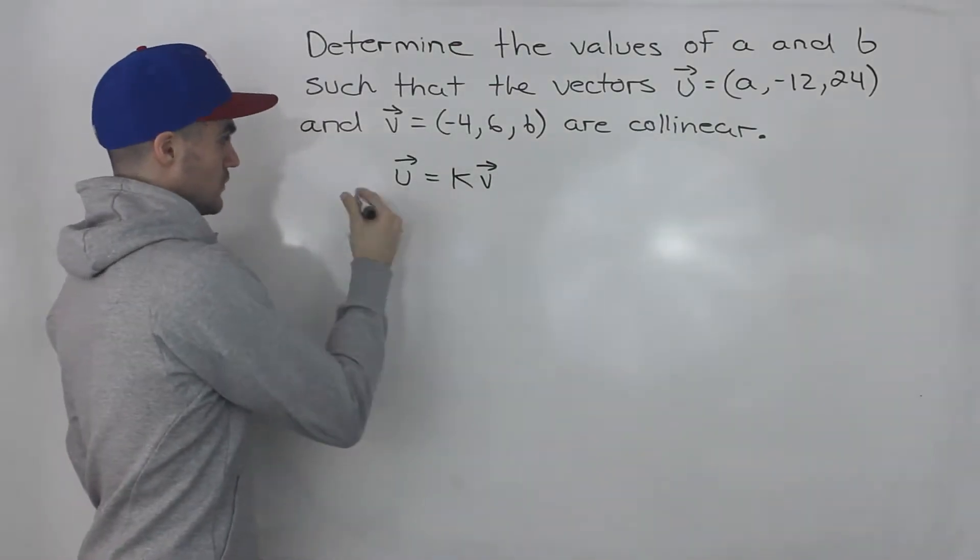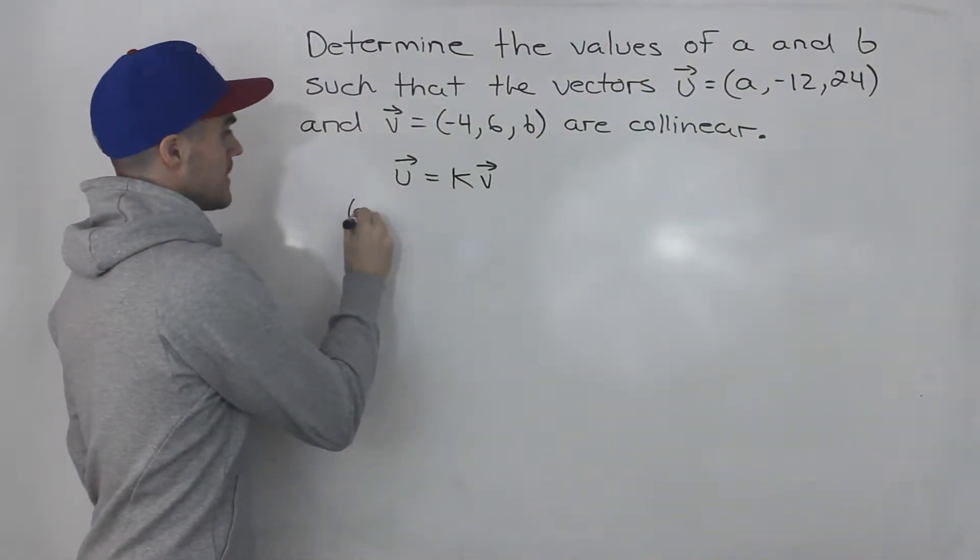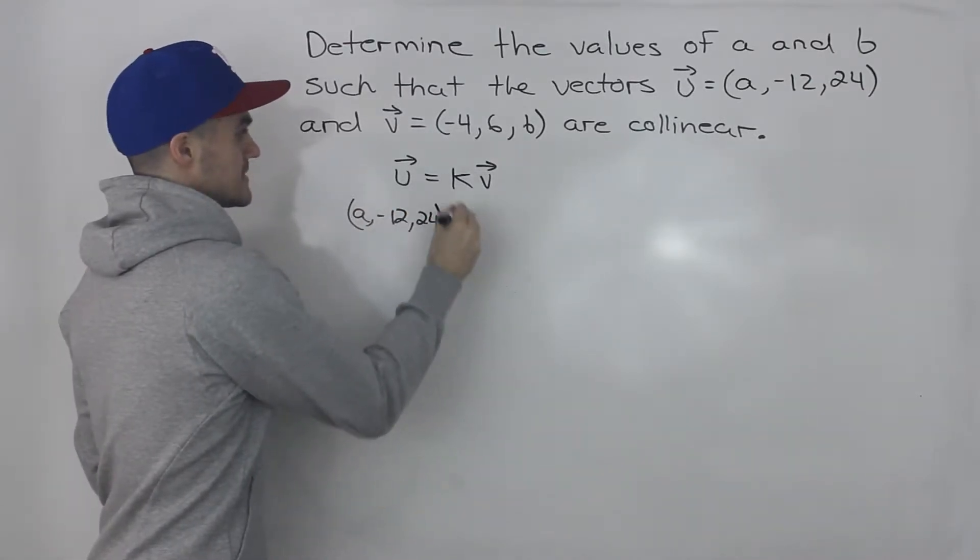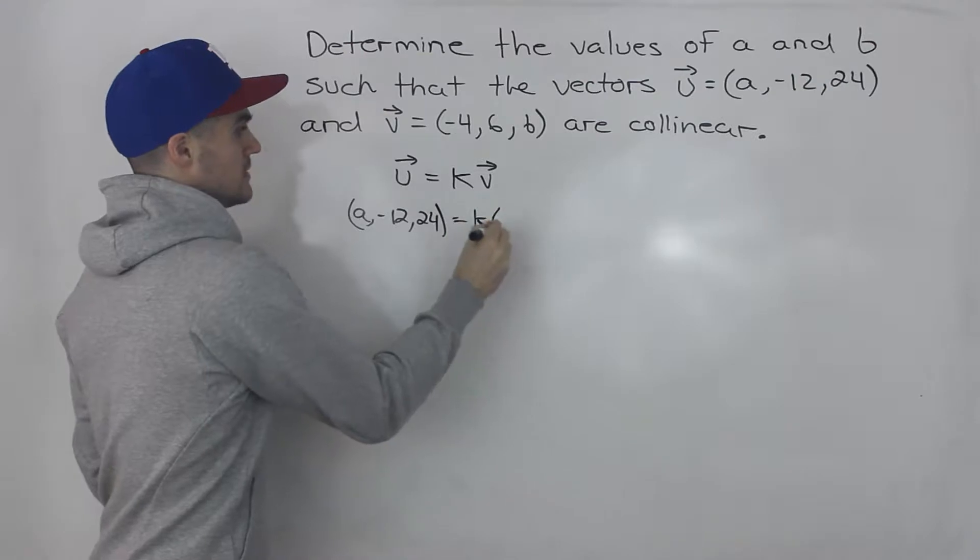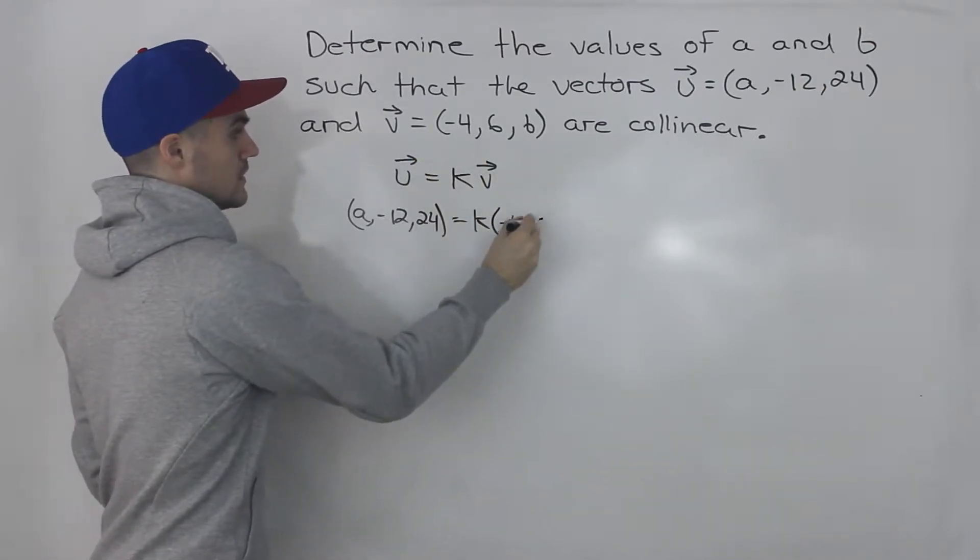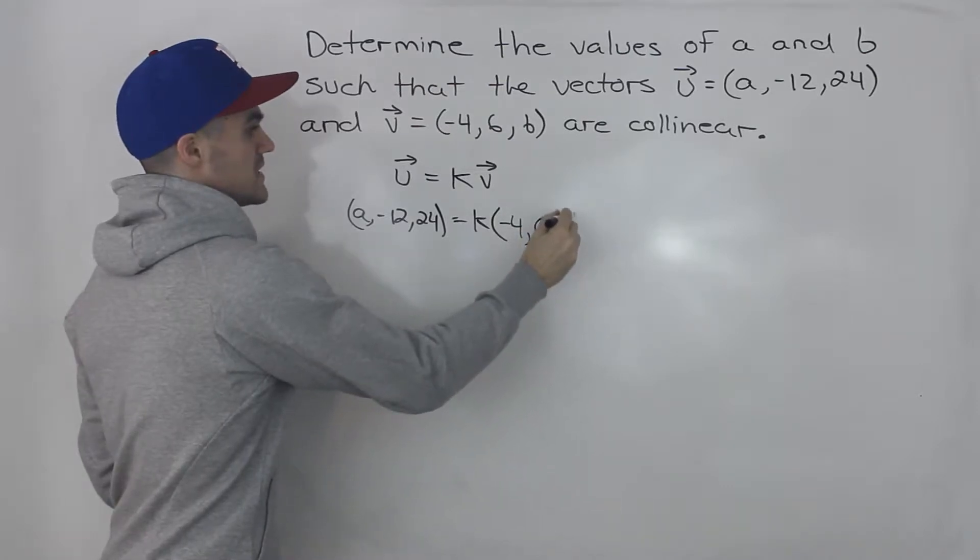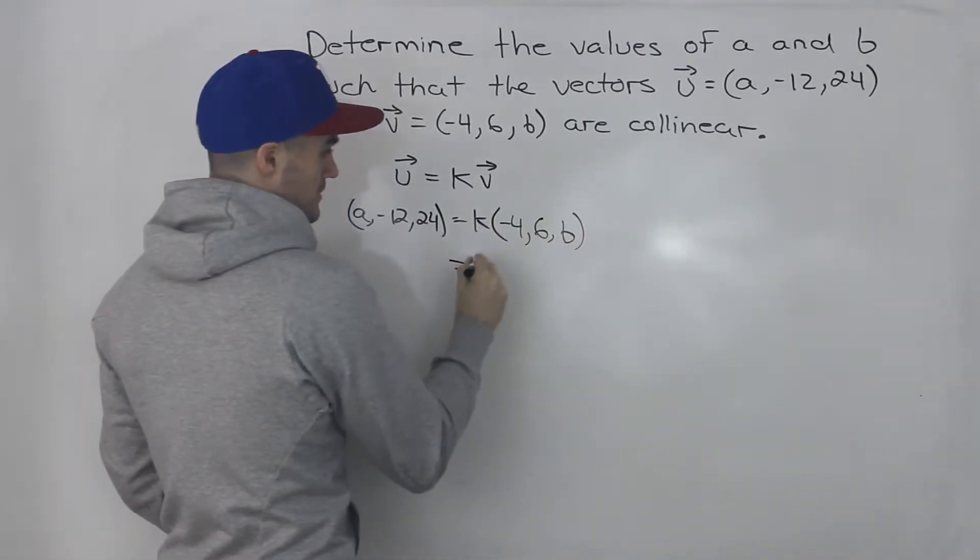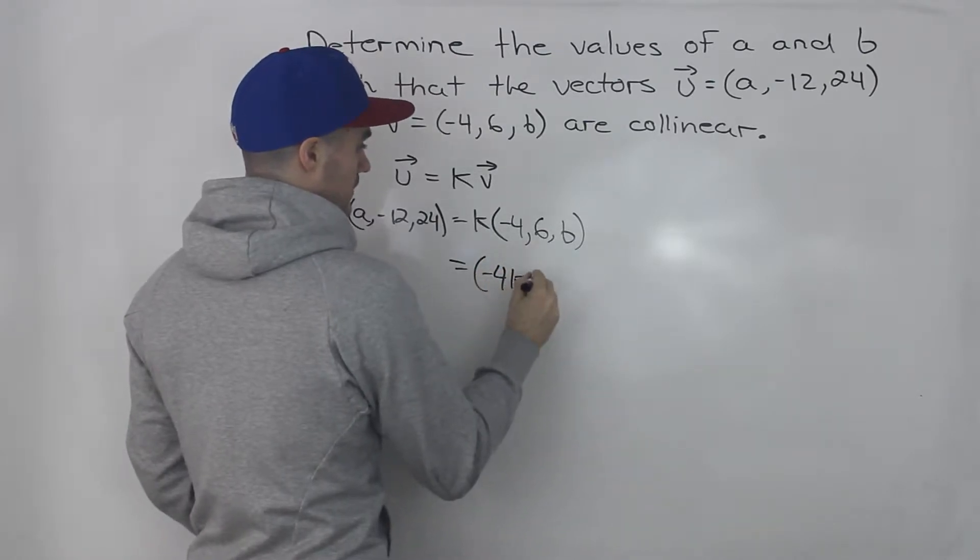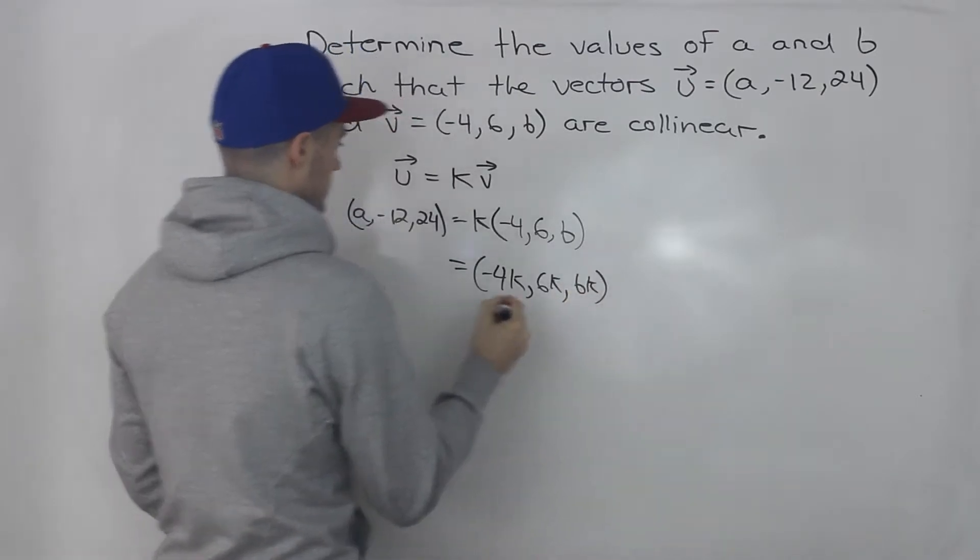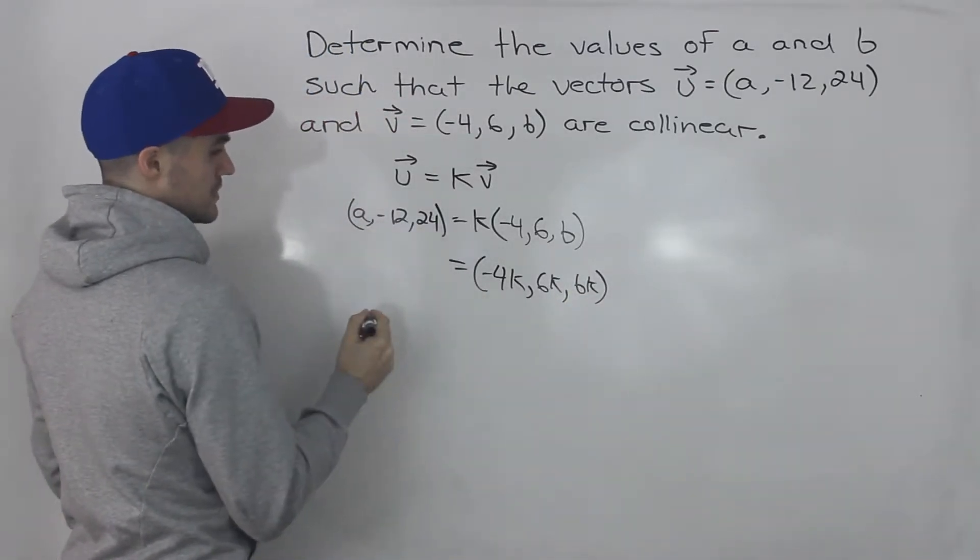So subbing in the Cartesian form for U, we got A, -12, 24, and that has to equal that scalar multiple K times the vector V, so -4, 6, and then B. We could distribute that K inside this bracket, so basically -4K, 6K, and then B times K has to equal these values here.